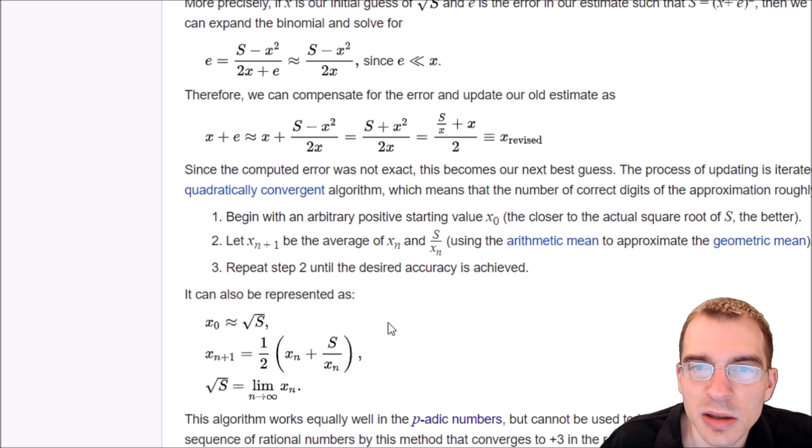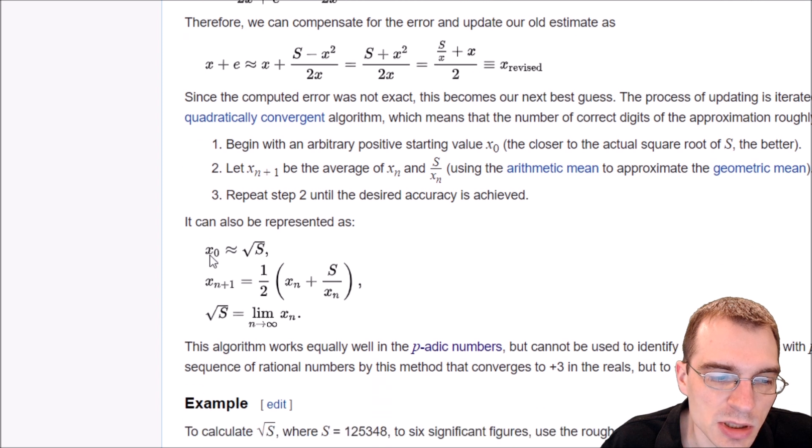We don't need to go too big into the details. The most important part of it is this here. It basically says that the method can be represented by this algorithm. So we start with some estimate x0 that's supposed to be somewhat close to the square root of s or whatever number you're working with. It actually doesn't have to be close to it. It just means that the closer your initial estimate is to the square root, the faster it will converge. But it doesn't actually have to be that close. We can just use whatever initial estimate we want to.